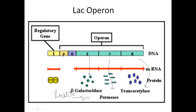Permease allows the cell to take up lactose from the environment, because lactose itself cannot enter the cell on its own. Lactose permease forms a channel through which lactose is transported from the environment into the cell, where it can be catabolized and used for various bacterial purposes.